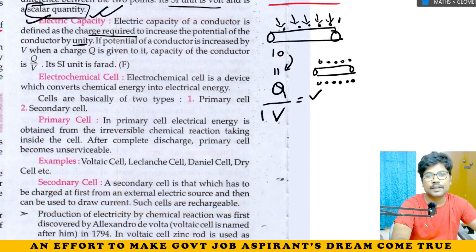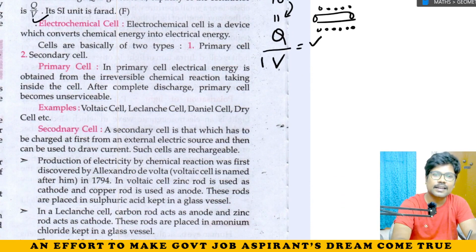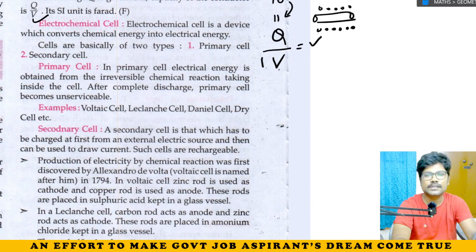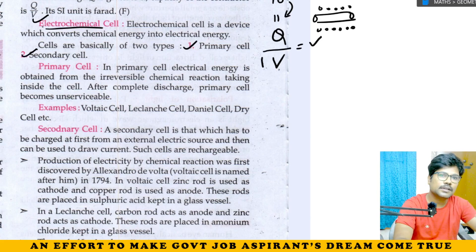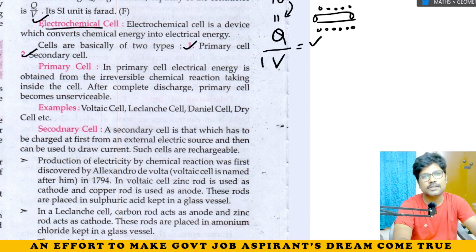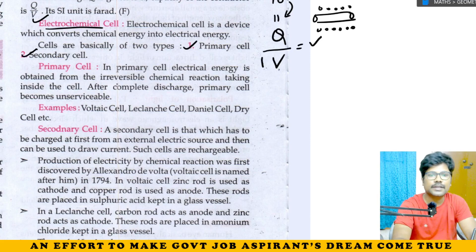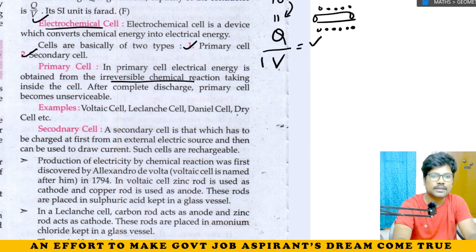Electrochemical cell: chemical energy is converted to electrical energy. Electrochemical cells include primary cells, which are non-rechargeable with irreversible chemical reactions, and secondary cells, which are rechargeable and reusable.